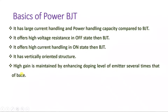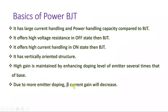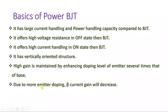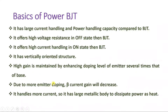When you increase the doping concentration of the emitter compared to the base, you can achieve higher current gain. However, beta — which is IC divided by IB — will decrease in Power BJT as you increase doping in the emitter. The agenda in Power BJT is to increase current handling capacity by increasing doping concentration in the emitter. By providing a vertically oriented structure, we increase its off-state voltage blocking capacity by adding an additional layer.